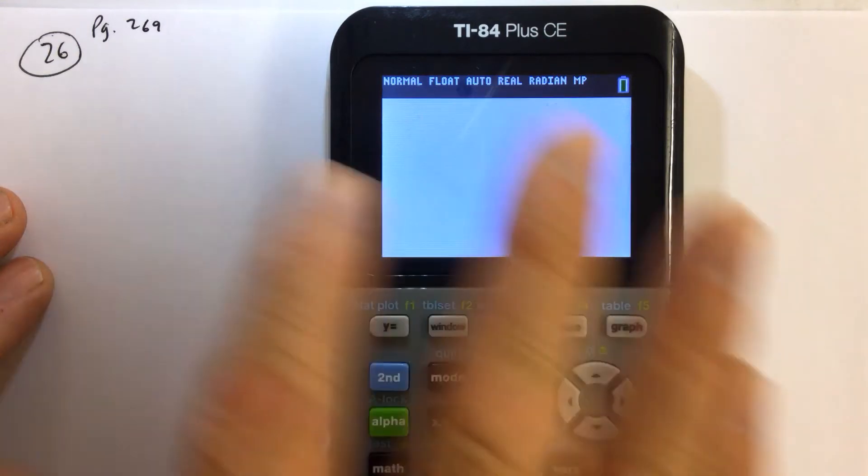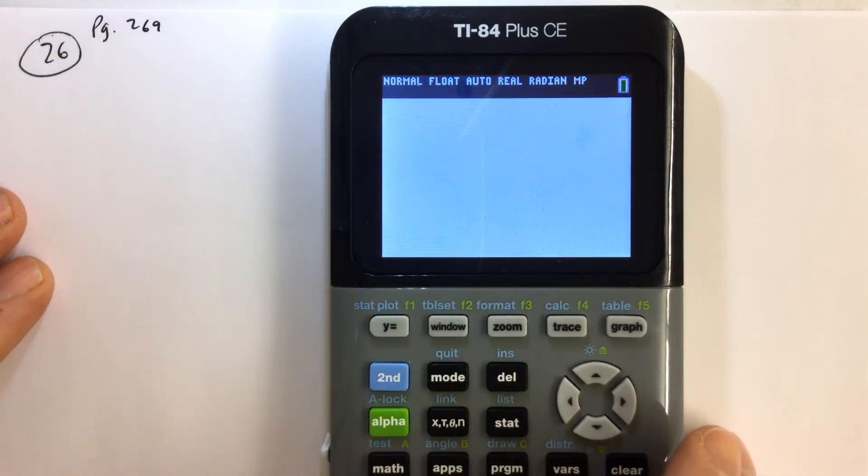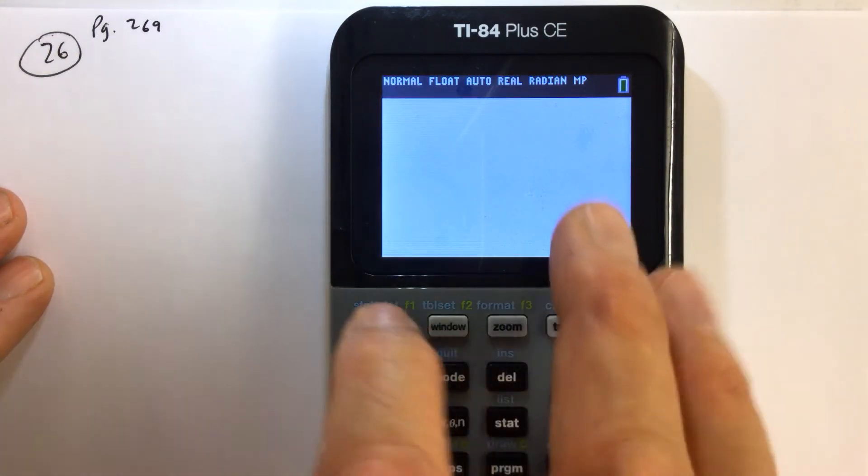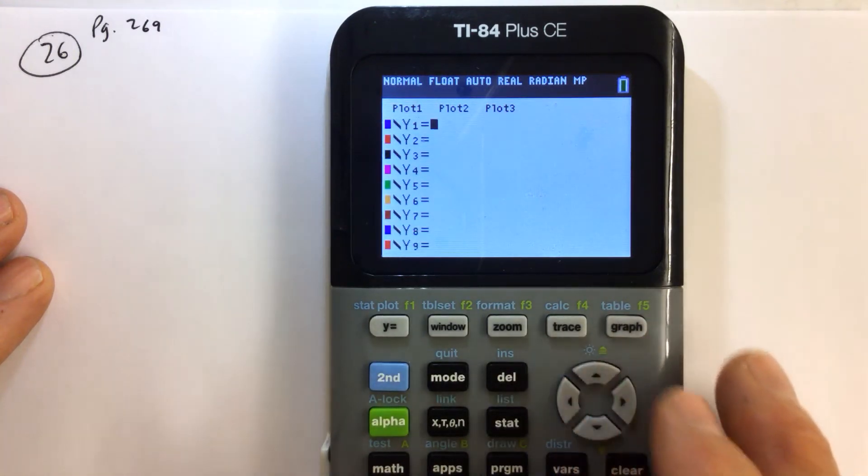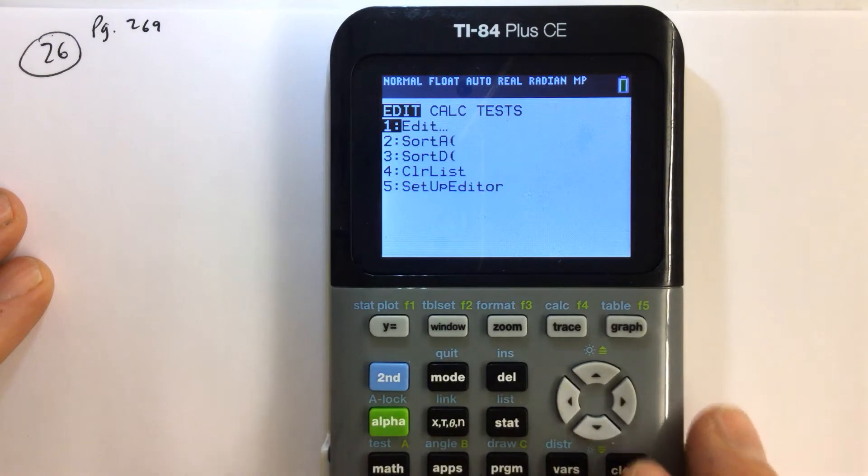Now it gives you a table over there. I'm not going to write the table here, but the table shows, first of all, let's go ahead and clear out any equations we have stored in our y equals. We go to stat, edit.